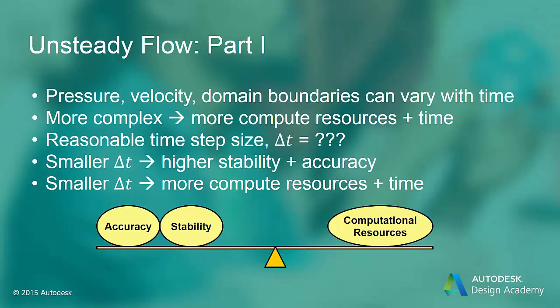In unsteady flows, the flow variables will vary with time. The flow domain boundary may also vary with time, and even the boundary conditions of the flow domain may change with time. Unsteady or transient flows are typically more complex than steady state flows, and CFD analyses of unsteady flow usually require more computing resources. These extra resources are needed for meshing or discretization required to capture the transient effects of the flow.